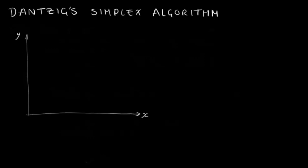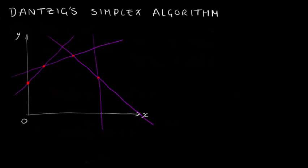So to start with, consider a collection of lines on a two-dimensional plane. These lines represent the boundaries of the inequalities of a linear program in two variables. This is basically just your standard y equals mx plus c sort of thing.